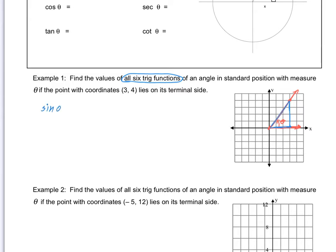So sine of theta would be the opposite measurement divided by the hypotenuse. We don't have any of those measures labeled, so let's do that. What are the measures of the sides of this triangle? Adjacent has to be three, and opposite is four. The vertical has to be four. And the hypotenuse must be five, because it's a Pythagorean triple. If we didn't know that, we could calculate the hypotenuse using the Pythagorean theorem.